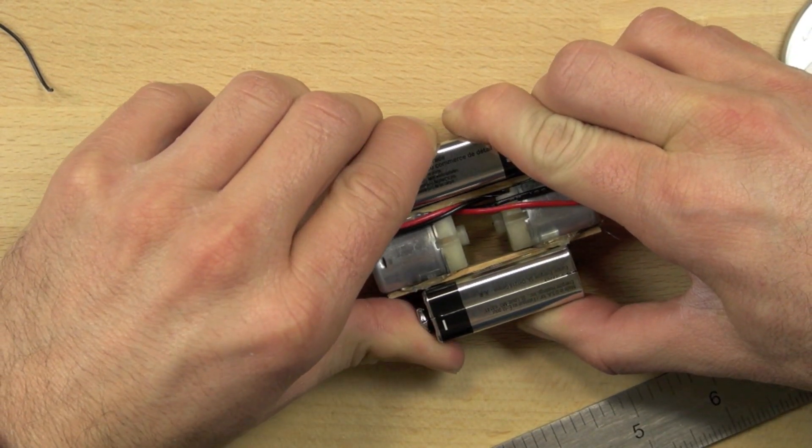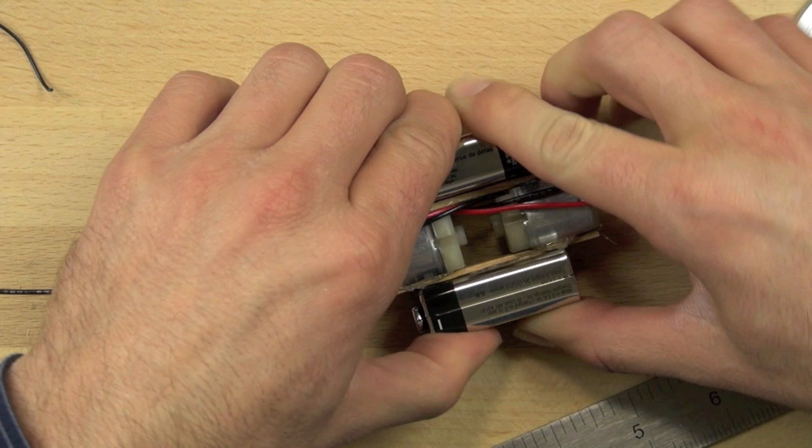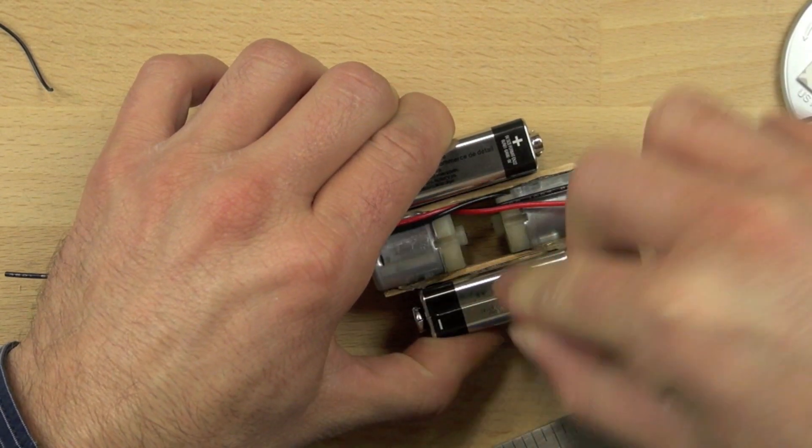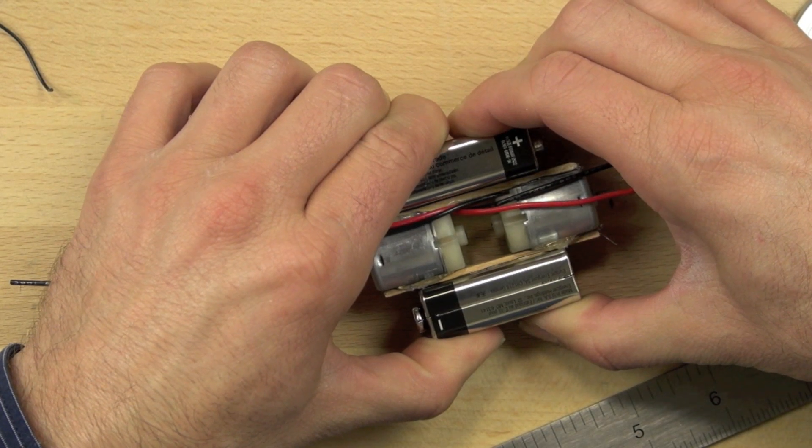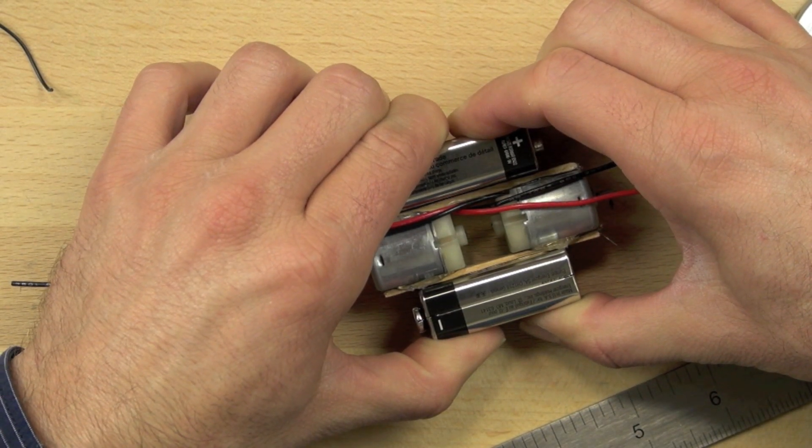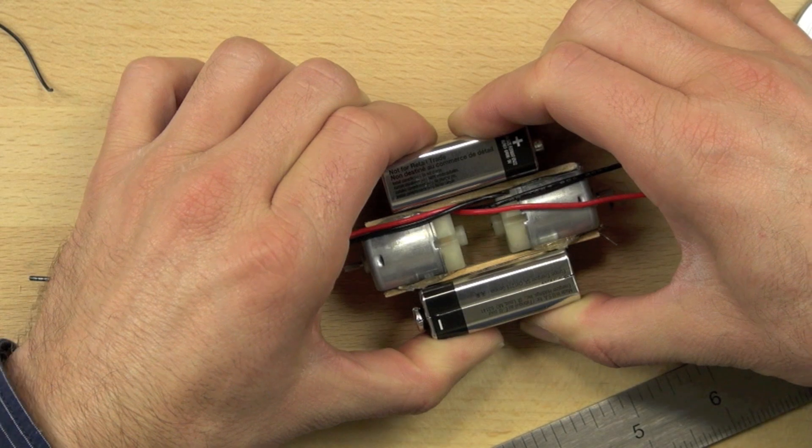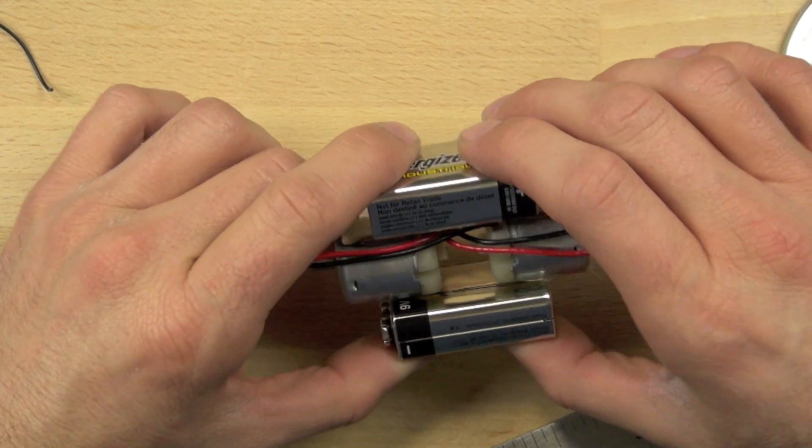If you have a partner, you can have the partner make sure that the batteries and the motors are all pushed flat against the table. Really important that they are flat. Again, because it's going to make it so much easier to attach the double stick tape from the bottom of the tap light to the top of the batteries.